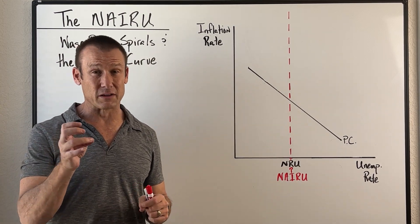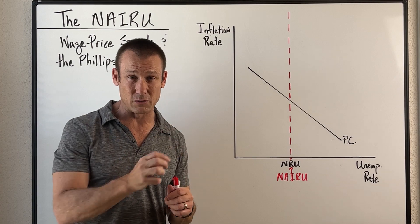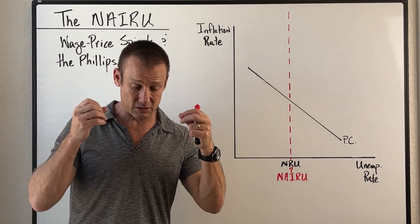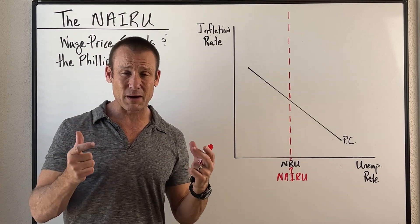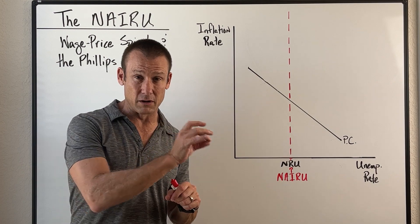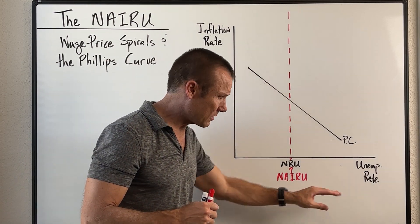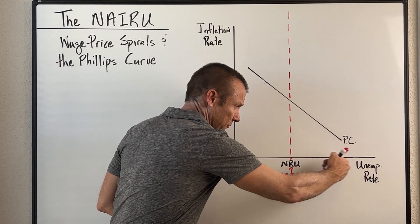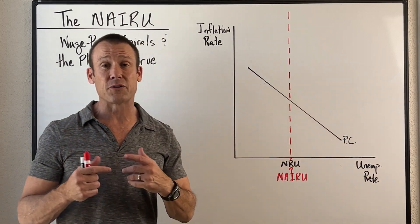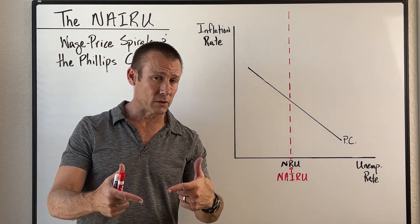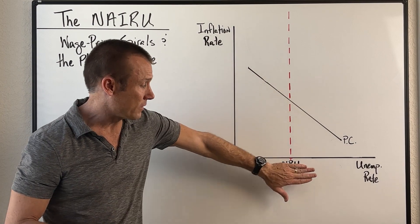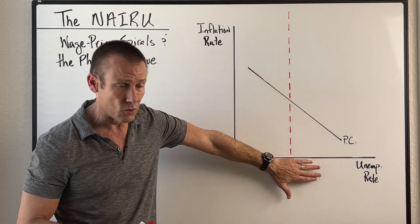Next, I want to talk about the NAIRU — the non-accelerating inflation rate of unemployment. I know that's a mouthful, but if you really break it down and think about that term, you might come up with the right definition. It's the lowest the unemployment rate can get — think of us moving to the left on the model — the lowest the unemployment rate can get without the inflation rate beginning to accelerate upwards.